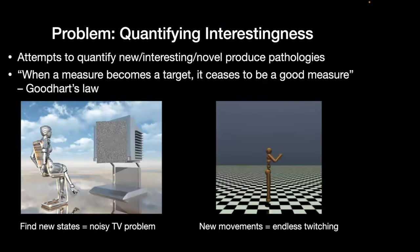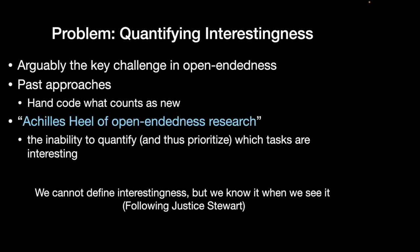One of the things holding back open-endedness research is we've always needed a way to know what's interesting, and we've always failed to be able to quantifiably and automatically determine that. If you try to quantify what counts as interesting, you end up with a lot of pathologies related to Goodhart's law — when a measure becomes a target, it ceases to be a good measure. For example, if you encourage an agent to seek new states, it often will just fixate on a TV tuned to a dead channel — the noisy TV problem — or it will just twitch forever.